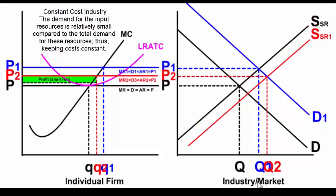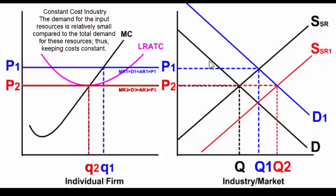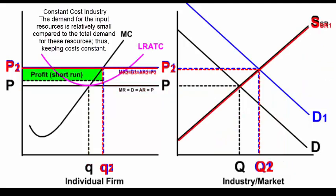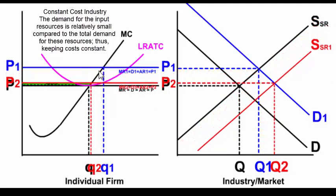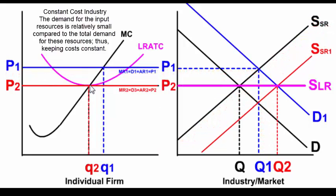There is entry into the marketplace, driving the industry price down and the industry quantity up. The individual firm loses those above normal profits and returns to where economic profit is equal to zero in the long run.